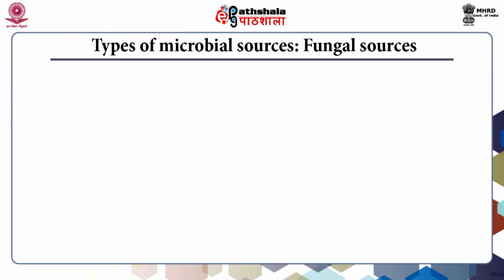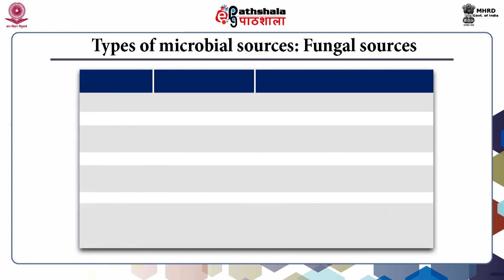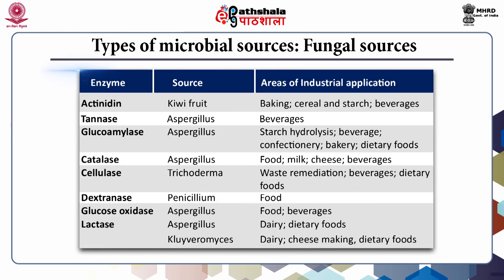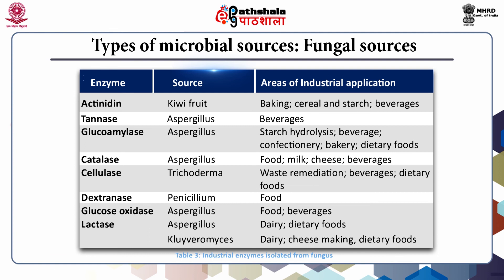There are lesser amounts of toxic components like antibiotics or steroids present in microbial sources compared to animal and plant tissues. Microbial enzymes also exhibit stability over a broad pH and temperature range. Some industrially important enzymes sourced from fungi are given in Table 3. These are obtained by fungal fermentation, and fungi have been sourced for a plethora of industrial hydrolytic enzymes ranging from amylases, glucoamylase, tannase, cellulase, dextranase, glucose oxidase, lactase, lipase, protease, rennet, invertase, pectinase, and many more.